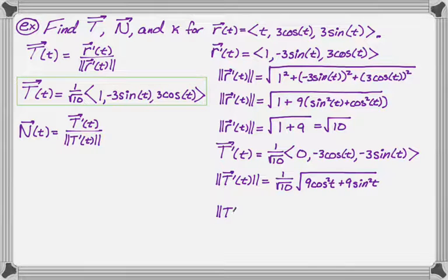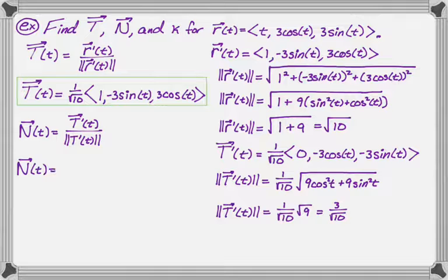So the magnitude of T' is one over root 10, which is just hanging out, times square root of nine, which is three. So we get three over radical 10. Okay, now we're ready to write this. So N(t), it's T', so one over root 10, and then zero, negative three cosine, and negative three sine.